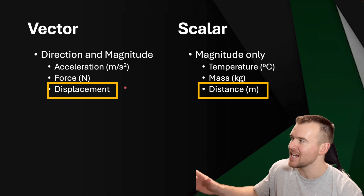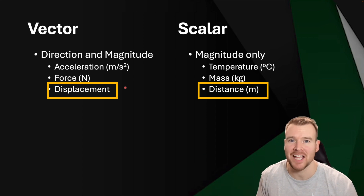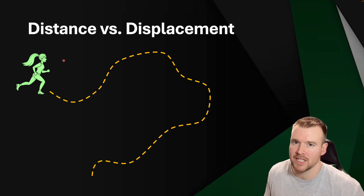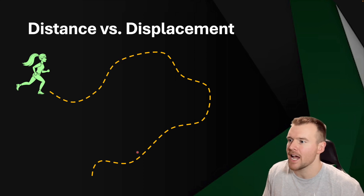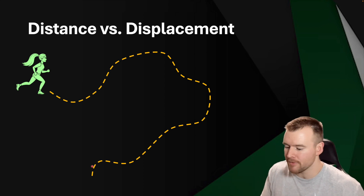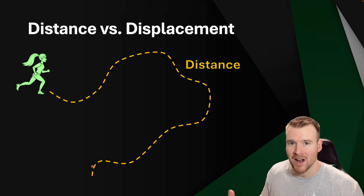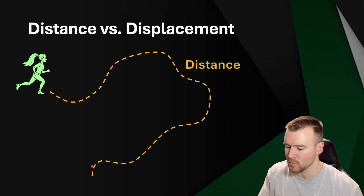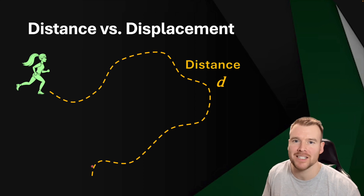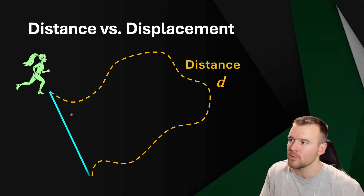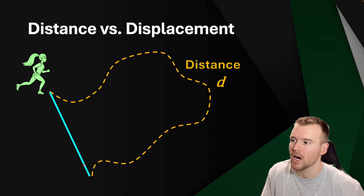Let's look at a diagram comparing distance and displacement. Say a person is going for a run and this map shows the entire route they ran. It doesn't matter that it's curved — how far they ran is their distance, represented with a D. The vector quantity, displacement, is a straight line from where we start to where we end.